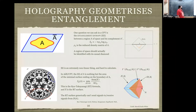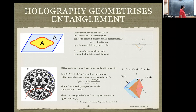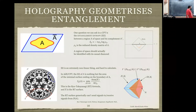In ADS-CFT, to calculate the entanglement entropy of region A on the boundary, you look for the minimal extremal surface in the bulk whose boundary agrees with the boundary of A. The area of that minimal extremal surface over 4G_Newton equals the entanglement entropy of A. This is called the Ryu-Takayanagi formula. It is, to date, one of the deepest things we know. This minimal extremal surface is called the RT surface.